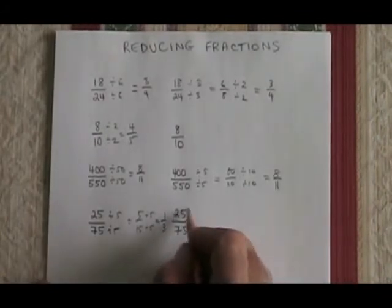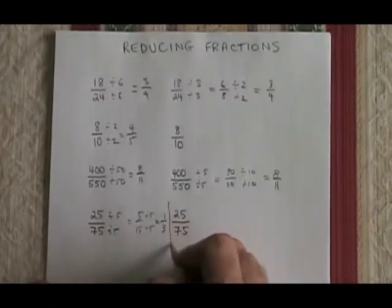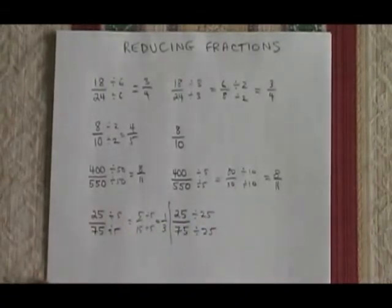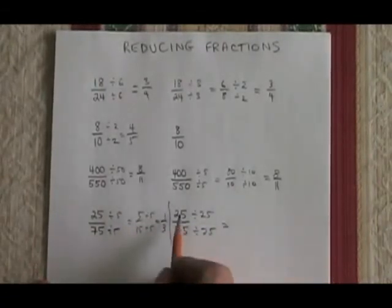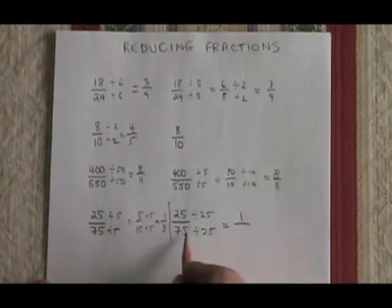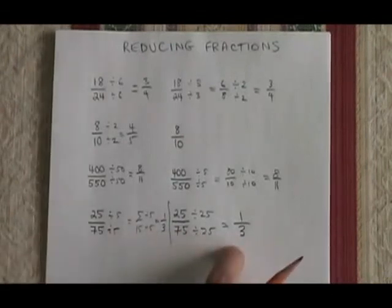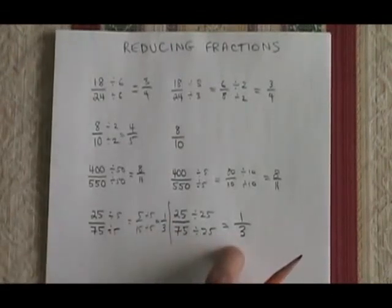If I notice right away that 25 and 75 have a common factor of 25, I can do it more quickly and get the same answer. 25 divided by 25 is 1. 75 divided by 25 is 3. My answer is one-third either way. This is how you reduce fractions. We'll see you next time.